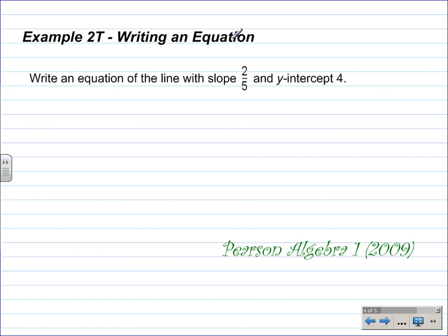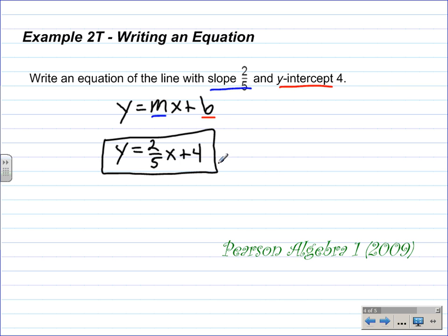Example 2T, writing an equation. Write an equation of a line with slope 2 fifths and y-intercept positive 4. The directions aren't real specific, but since we're on a lesson with writing in slope-intercept form, we're going to work with that: y equals mx plus b. It's a pretty easy substitution. The slope is 2 fifths, that is our m, and the y-intercept is our b. So we rewrite this equation by substituting those values in, 2 fifths for m. That gives y equals 2 fifths x plus 4, and we substitute 4 in for b. There's our solution. That's a pretty easy, pretty quick problem to do.